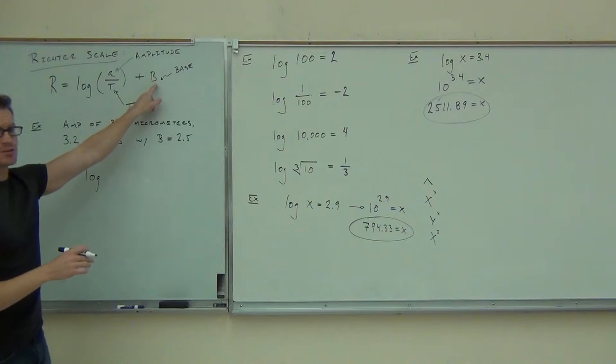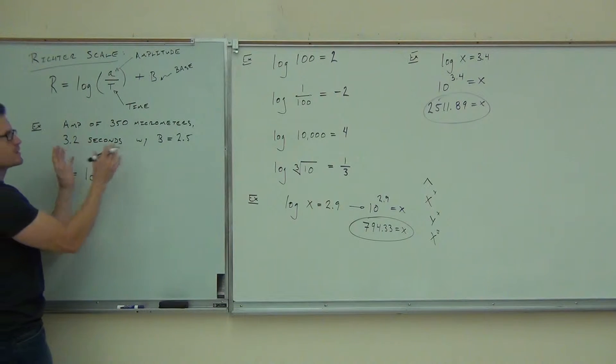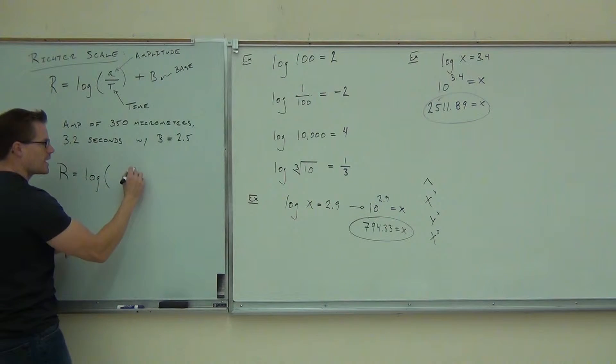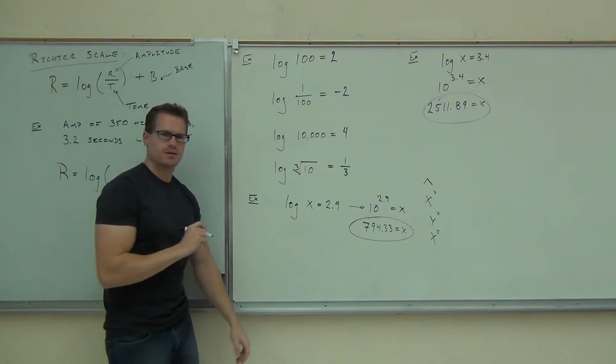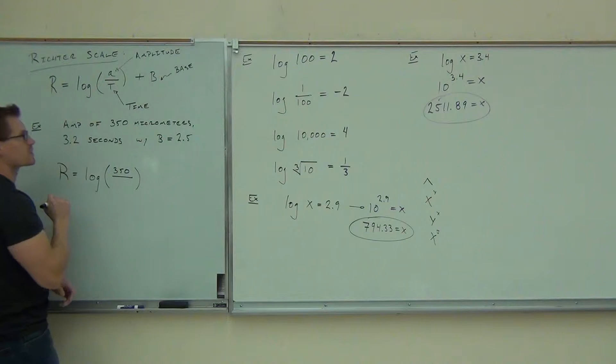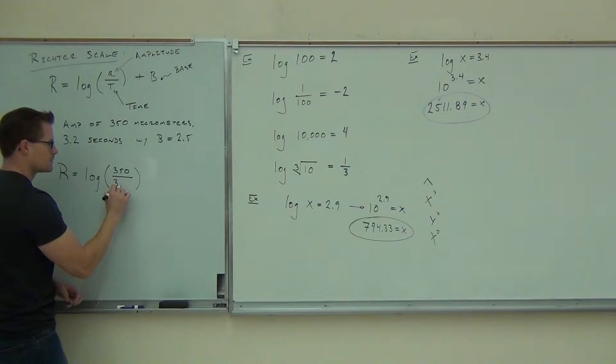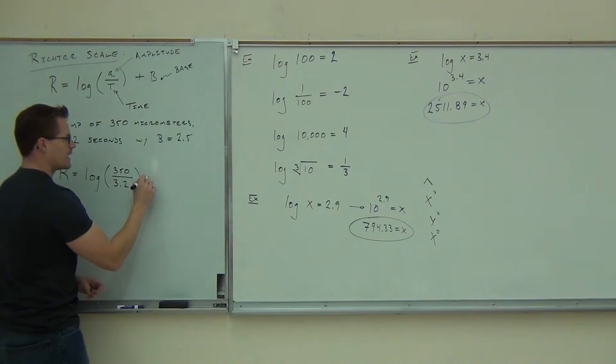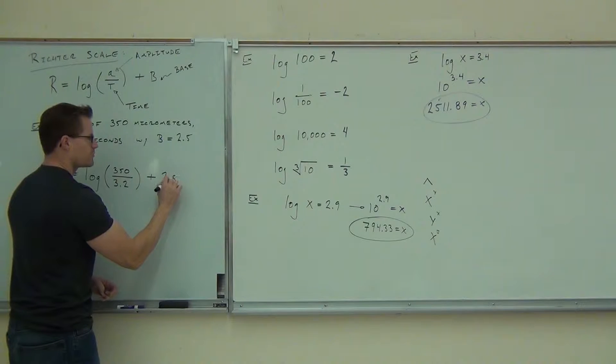This B, that's going to be given to you. So this base, it's a log base 10 no matter what. So our A, what's our A in this case? What is our T? And then we're going to have plus 2.5 at the very end.